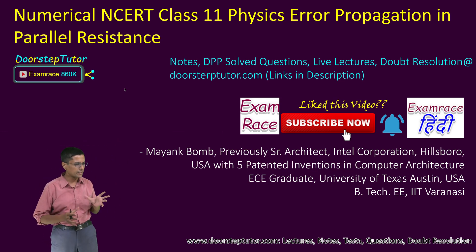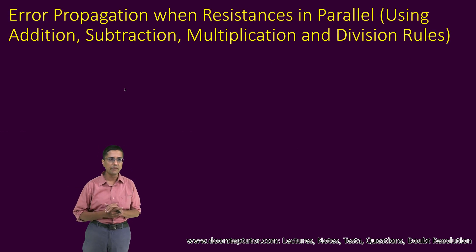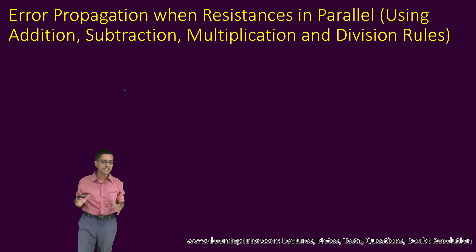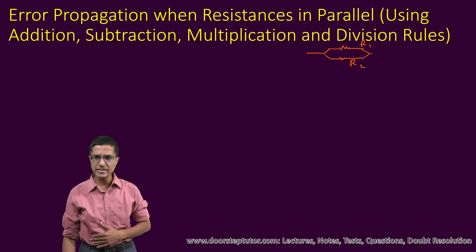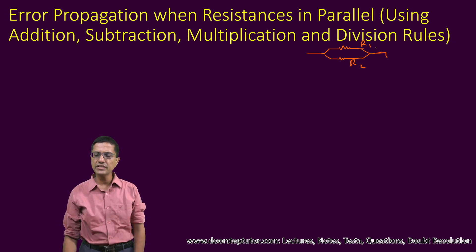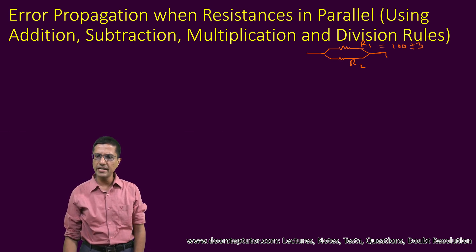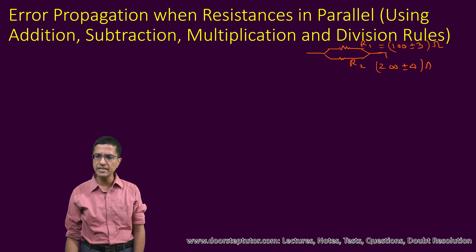Friends, in this class we will discuss a specific question concerning the propagation of error when two resistances are connected in parallel. I have two resistances connected in parallel — resistance R1 and resistance R2. Both have been measured, so there is some error in them. The first has been measured as 100 ± 3 ohm, and the second as 200 ± 4 ohm.